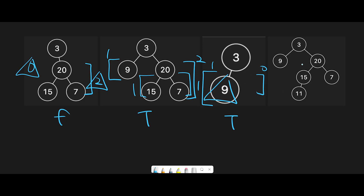How about the last tree? Is this true or false? This is false. The height of the left subtree is one, and the height of the right subtree is three. The difference is two, which is more than one, so that is false.